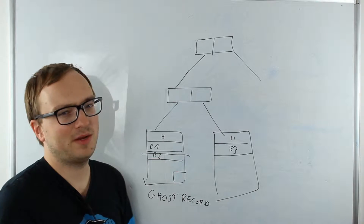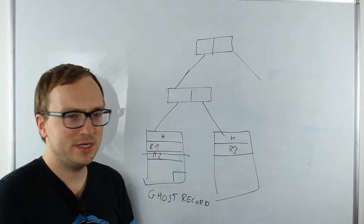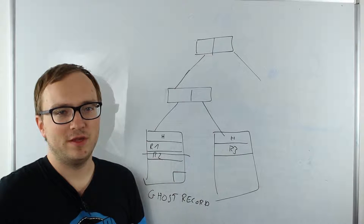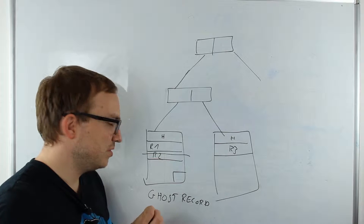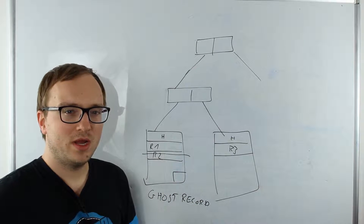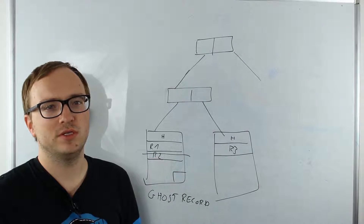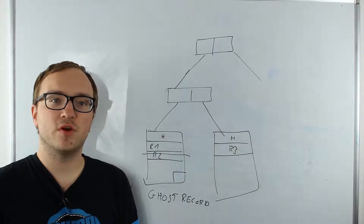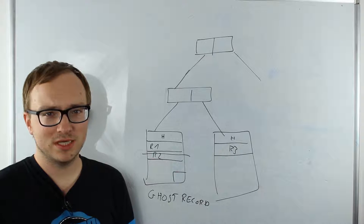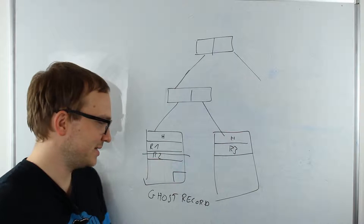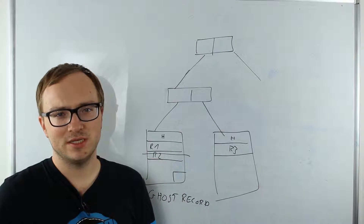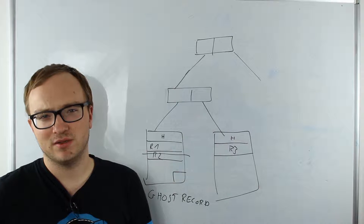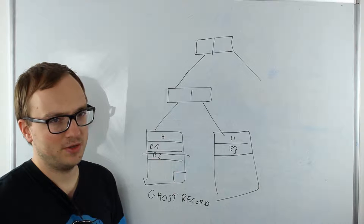If we need space on that page, SQL Server will reuse the ghost-flagged record. If you delete and insert the same thing again, it will reuse the space. This technique is also good for fast rollbacks — if you deleted a row and need to roll back, the flag is simply unset and you don't need to actually insert new data. Over time, a background process called ghost cleanup runs and physically removes all ghost records from pages.